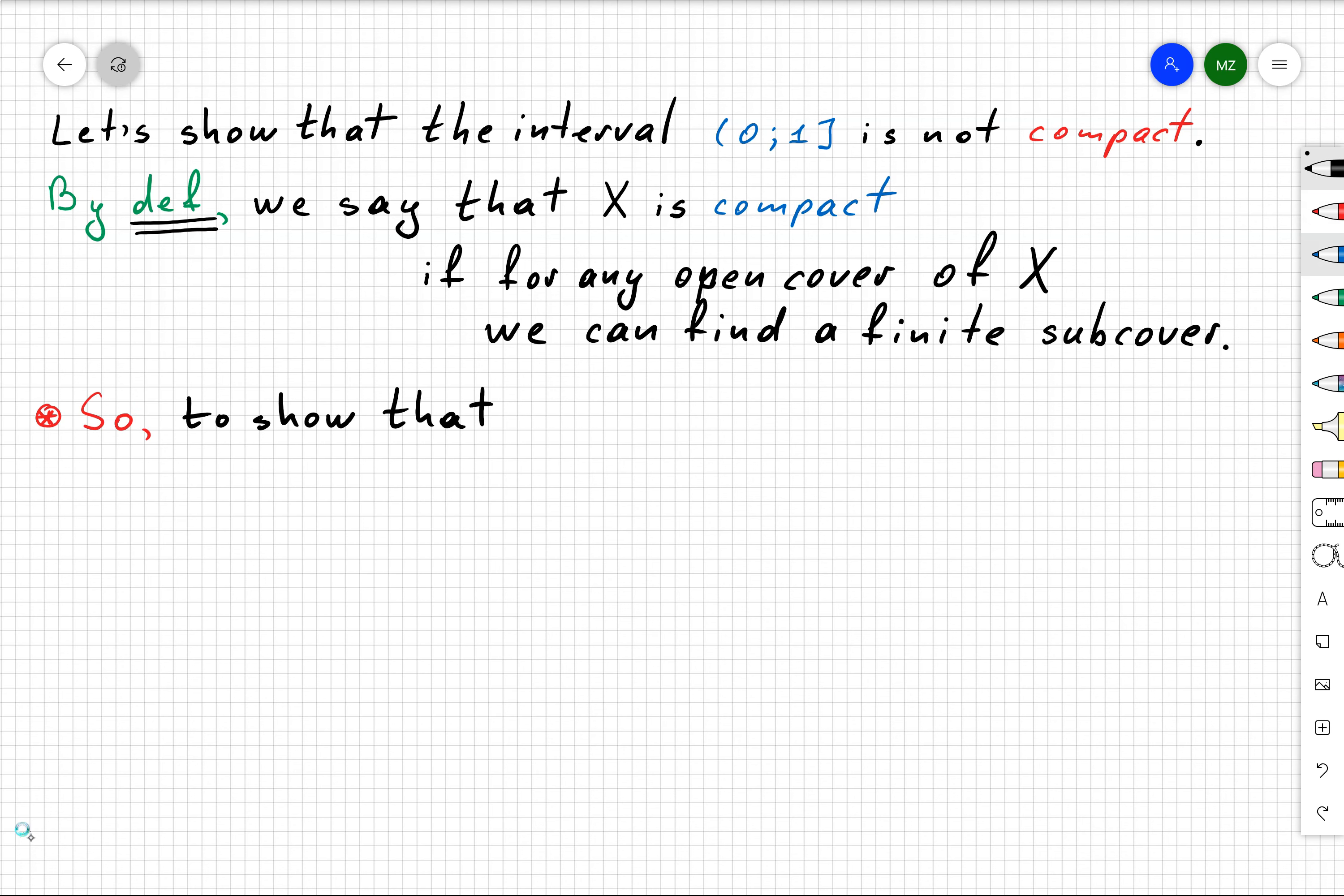To show that the half-open interval (0,1] is not compact, we just need to find some open cover for which there is no finite subcover.